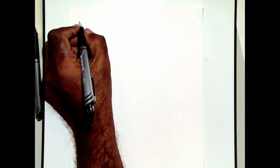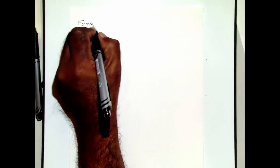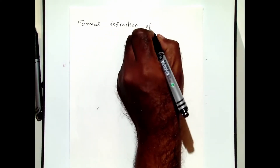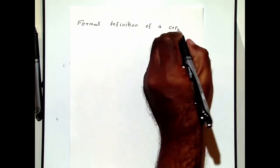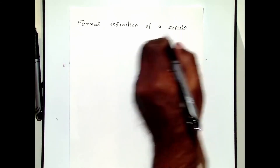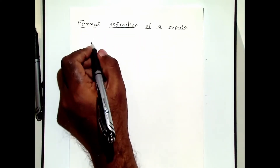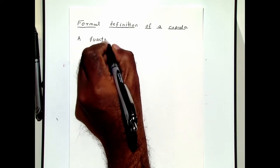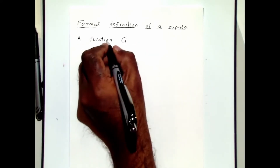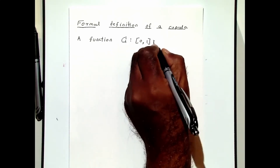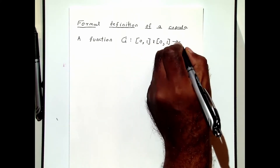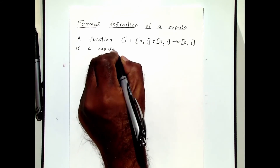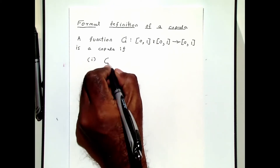In this video I shall give you the formal definition of a copula. A function C from the unit square to the unit interval is a copula if the following conditions are satisfied. The first condition is...